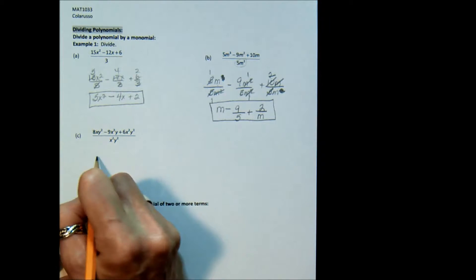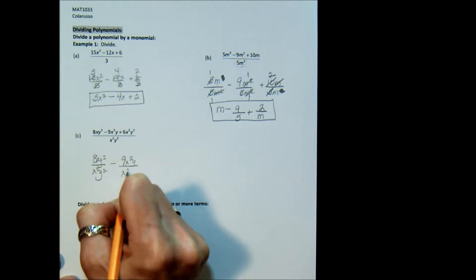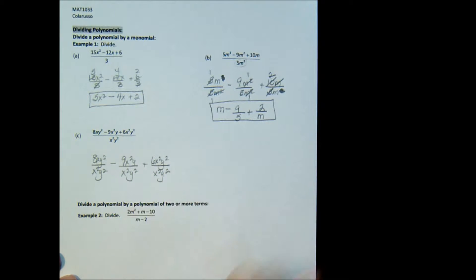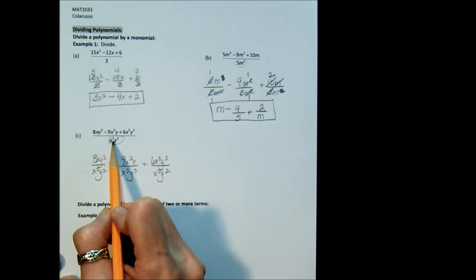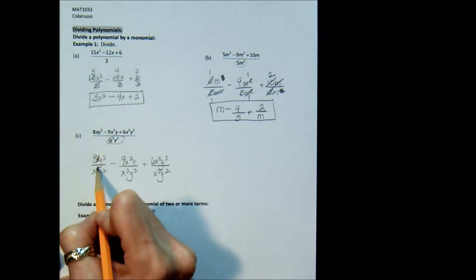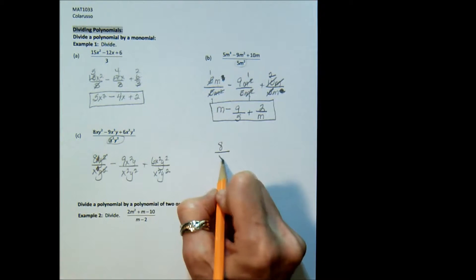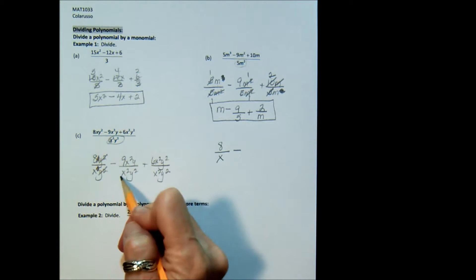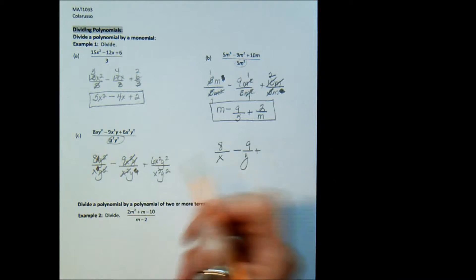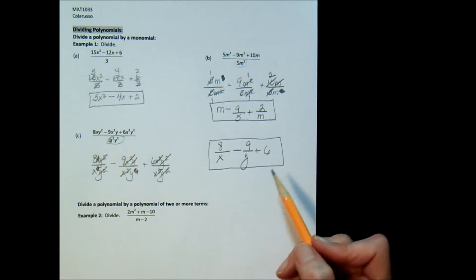Looking at the next one — division by a monomial — we will take 8xy² over x²y², minus 9x²y over x²y², plus 6x²y² over x²y². I carried that monomial through to each of my three denominators — there are two variables in it but no plus or minus sign, so it's still a monomial. Here this x crosses out one of those, the y's cross-cancel, and what I have left is an 8 in the numerator and an x in the denominator. Here, x's cross-cancel and this y cross-cancels one of those, so there is a 9 in the numerator and a y in the denominator. Here, x²'s cross-cancel, y²'s cross-cancel, and all I have left is a 6. So that's the easy division — division by a monomial.